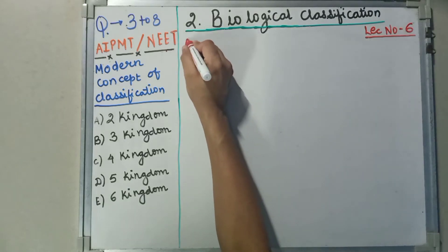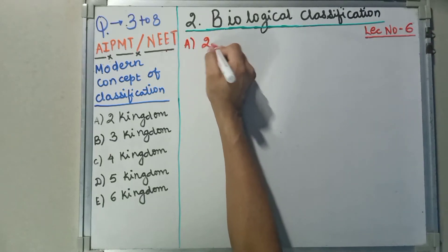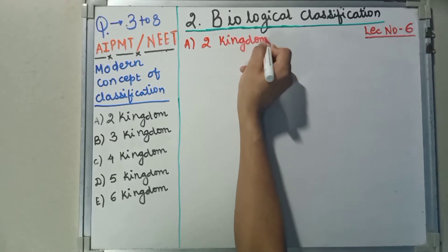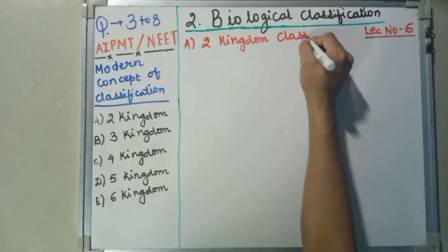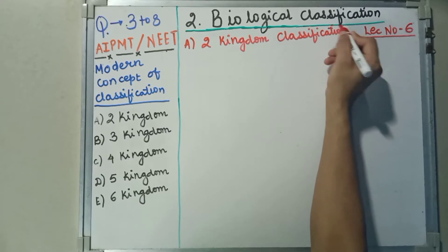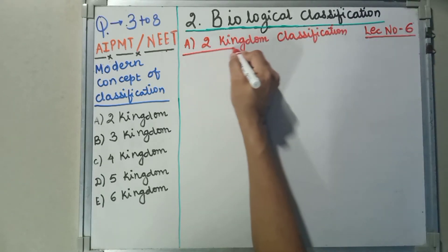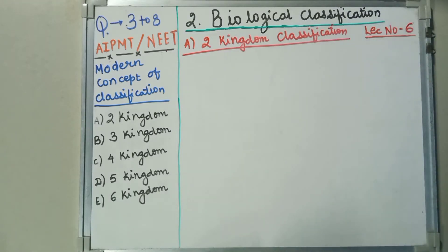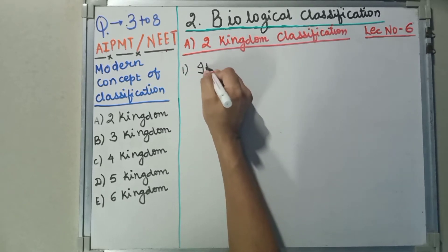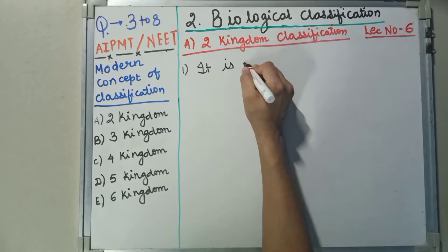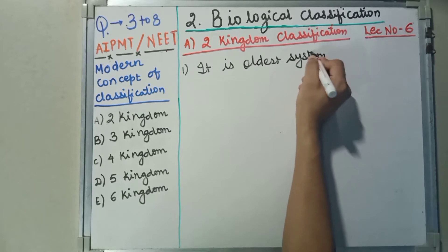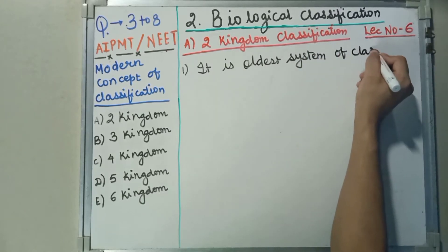Let's start with the first topic: two kingdom classification. The first point is that it is the oldest system of classification.